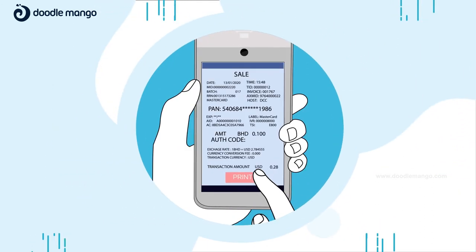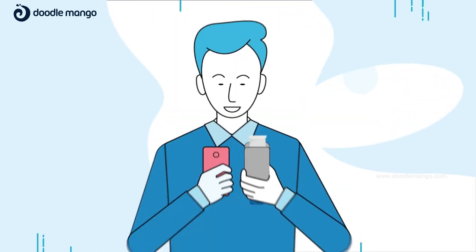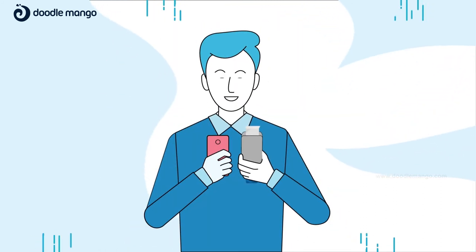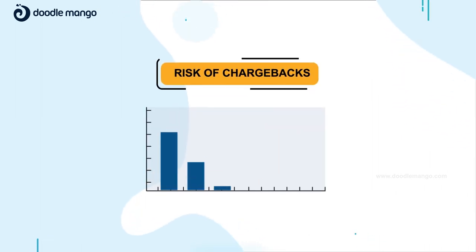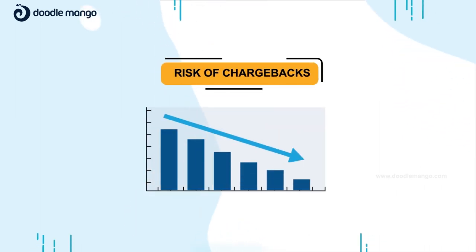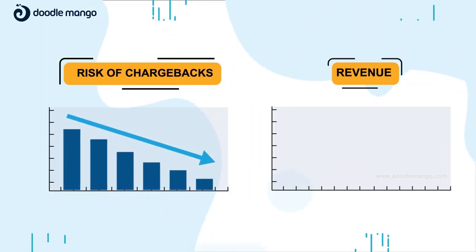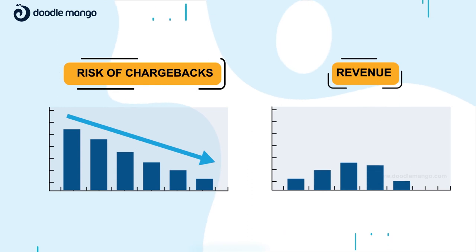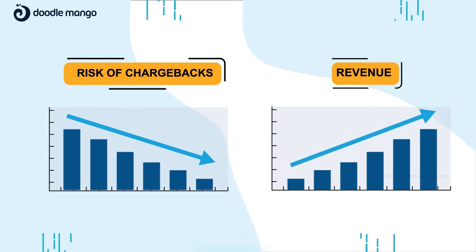With the AFS DCC solution, the amount on the receipt matches that on your customer's bank statement, reducing the risk of chargebacks or disputes and giving your business the opportunity to benefit from a new, valuable revenue stream.